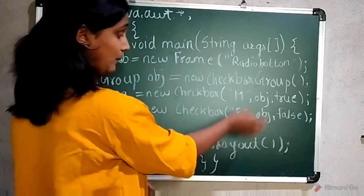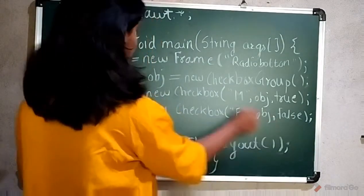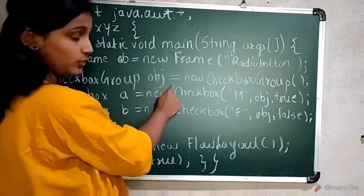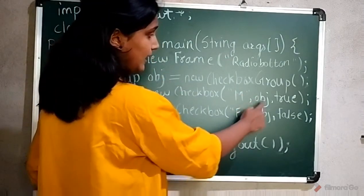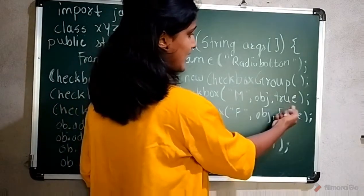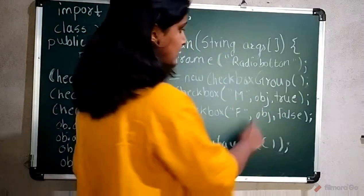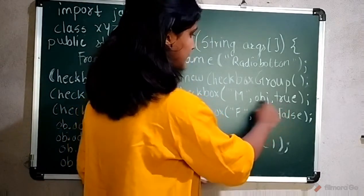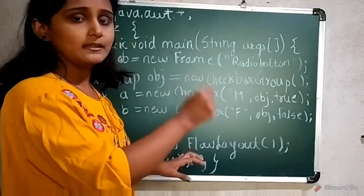To make this radio button we're going to pass this object obg which is the object of checkbox group. This reference we pass here. This true here means by default whenever we have output it will be ticked, the radio button will be on.